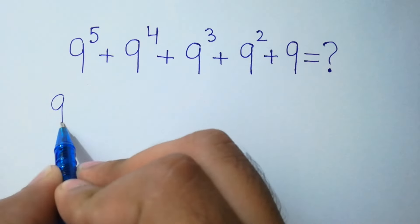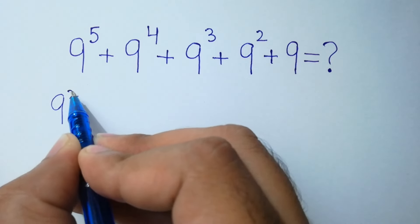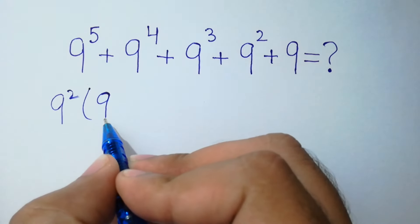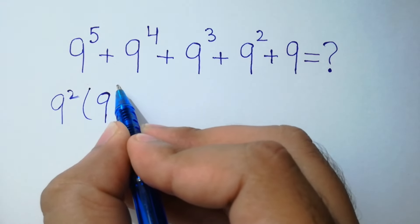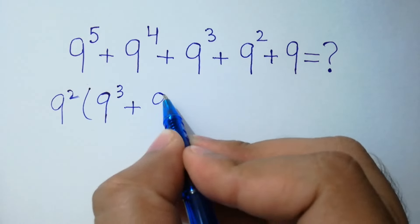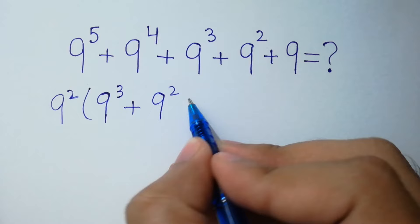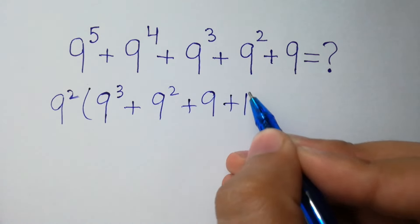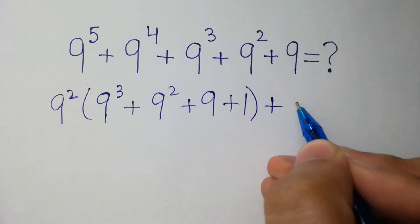We can factor out 9 square. We have 9 square times 9 to the power 3 plus 9 square plus 9 plus 1, close bracket, plus 9. This is our first step.